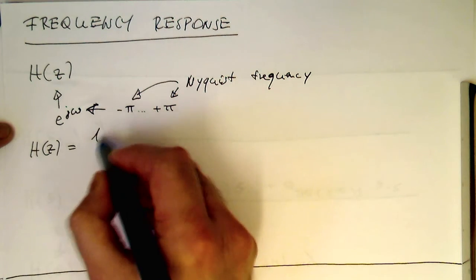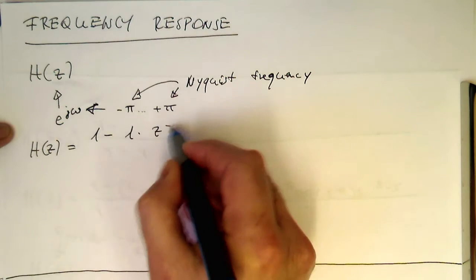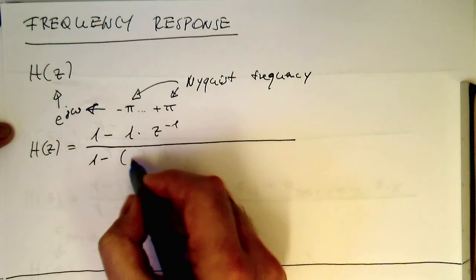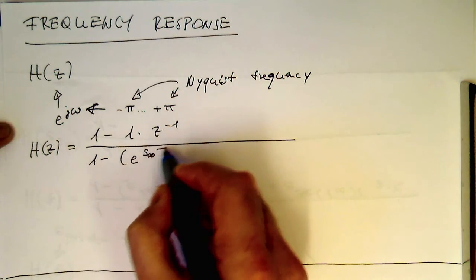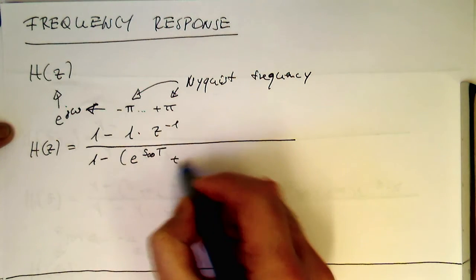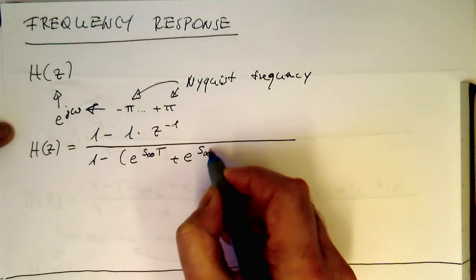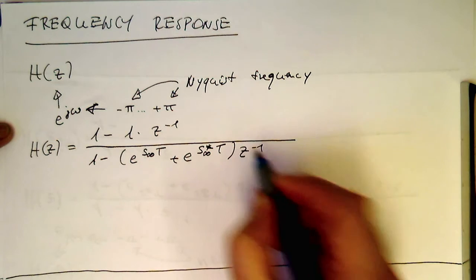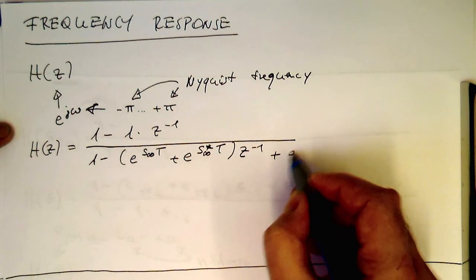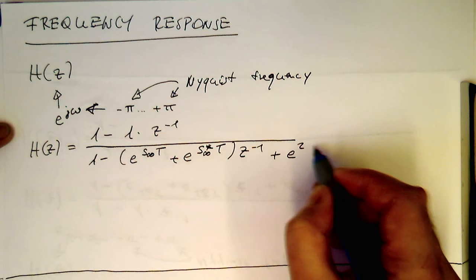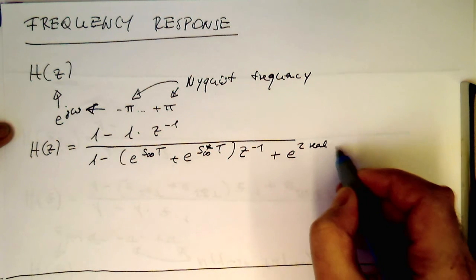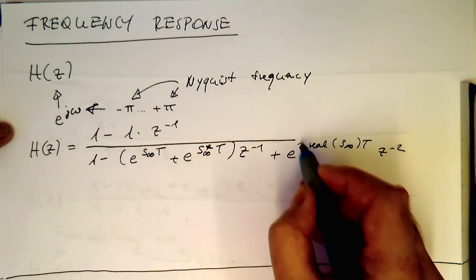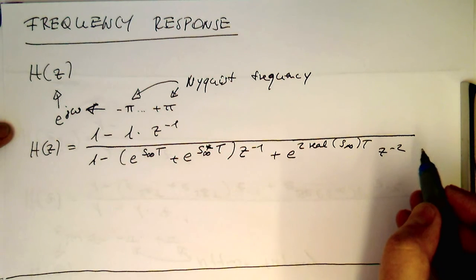it was 1 minus and then 1 multiplied that to minus 1 for the FIR part, and then this is here 1 minus and then e to S infinity T plus e to S infinity star T that to minus 1 delayed by 1 time step and then plus e to 2 times the real value of S infinity T. And then this delayed by 2 time steps here. So, that is our function H of Z.